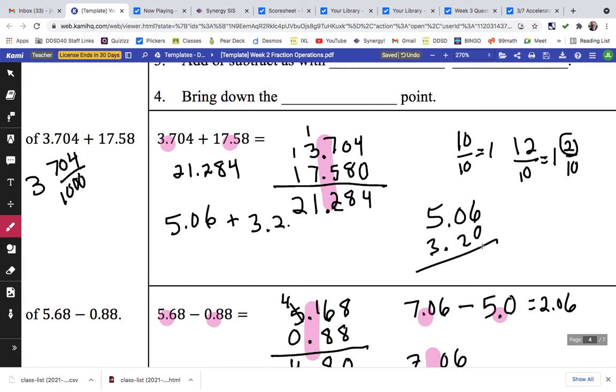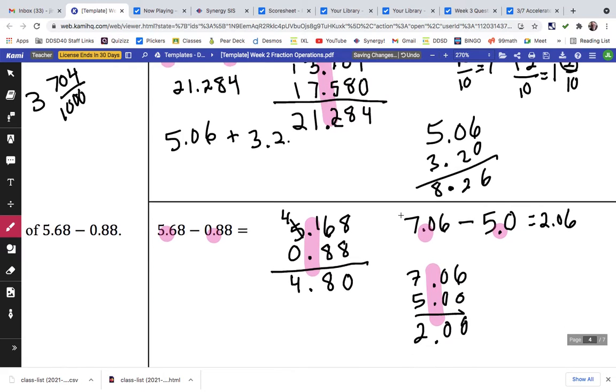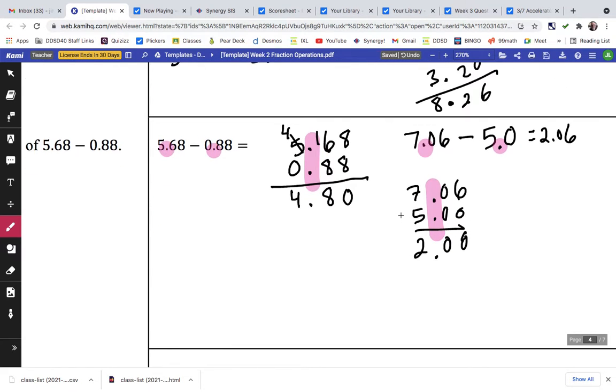Notice how there's nothing in the hundredths place to combine with that 6, so we just put a 0 there. 6 plus 0 is 6, 0 plus 2 is 2, the decimal point goes right there, 5 plus 3 is 8. So, there's 8.86.